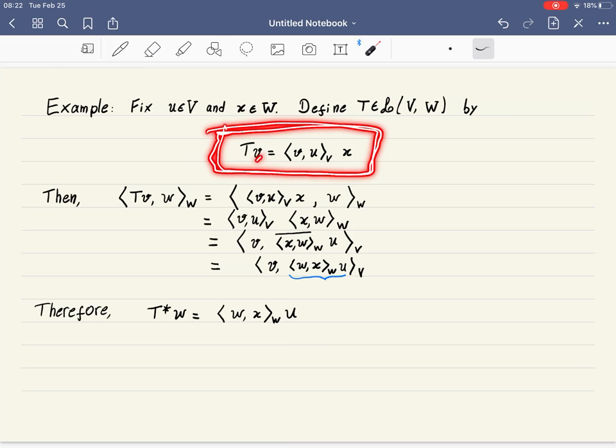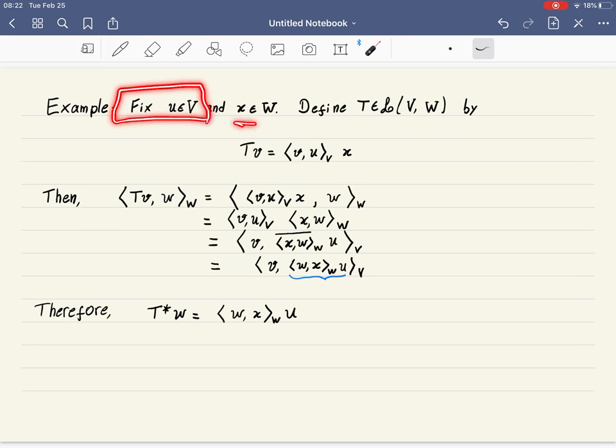For every V, it assigns this number here. So it takes V, computes the inner product with a fixed vector u, and that gives a number. Multiply that number by a fixed vector x, and this defines my map T. It starts with some fixed vector u, some fixed vector in W, and we define T by this equation.